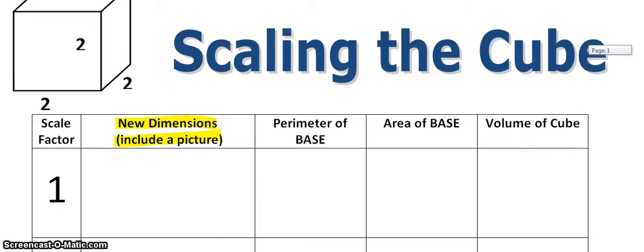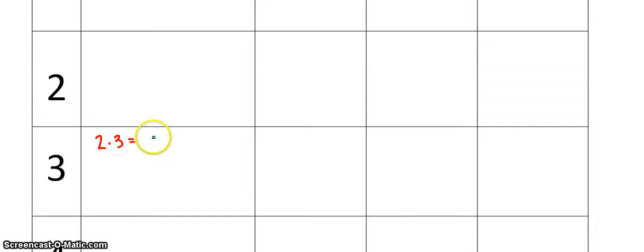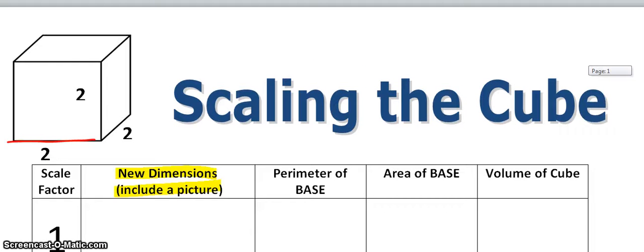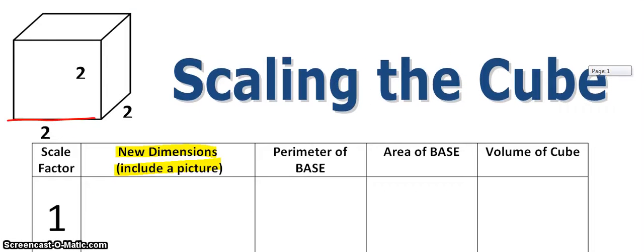And if I wanted to scale this by a factor of 3, what you would do is you'd multiply all of the dimensions — the length, the width, the height — by that scale factor. So if I wanted to scale it by a factor of 3, the length would be 2 times 3, which would be 6. And since it's a cube, all sides would be the same. So now this cube has become 3 times the size — instead of a 2 by 2 by 2, it's a 6 by 6 by 6.